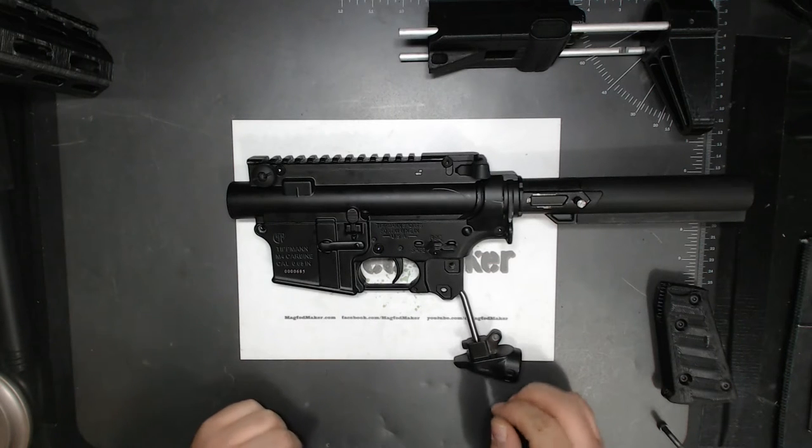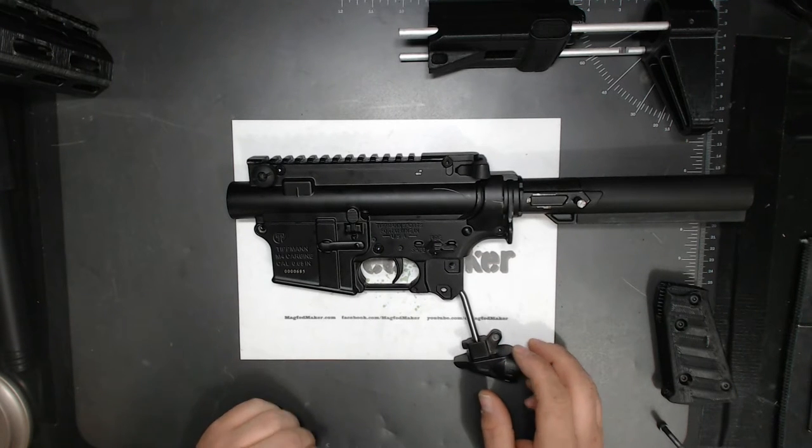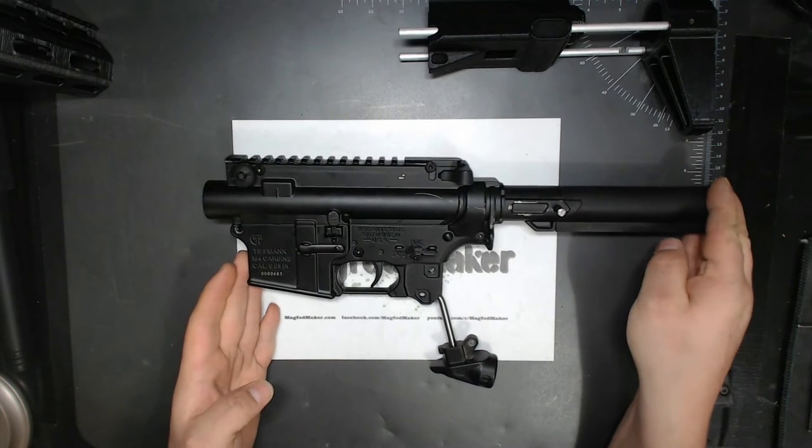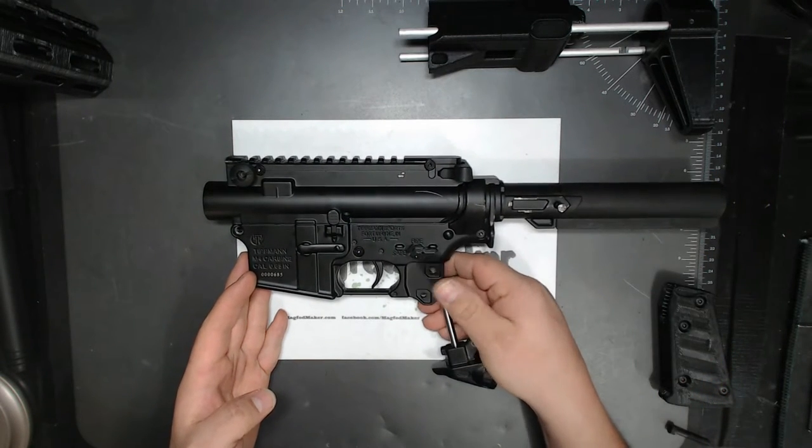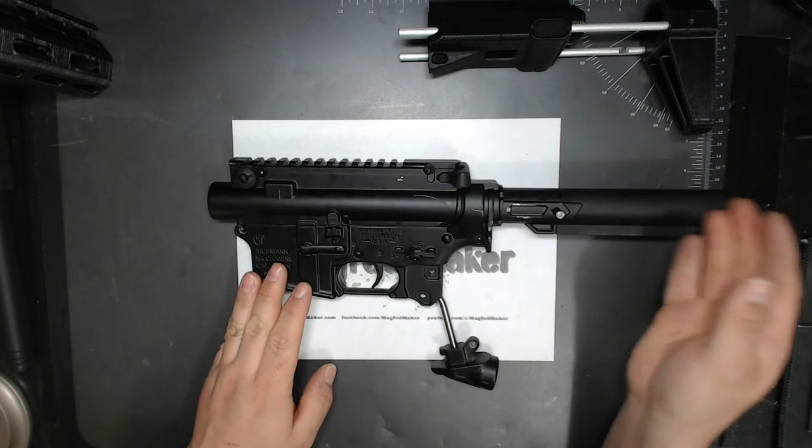Anyway, for the Tippmann TMC, here's how you should have stripped down your TMC, which is all pretty basic in the instruction manual. Taking off the pistol grip, the handguard, and the buttstock.